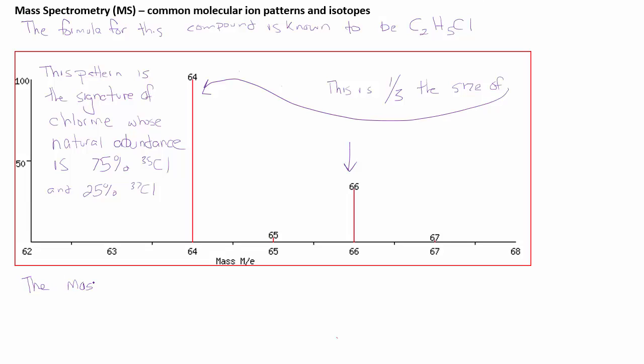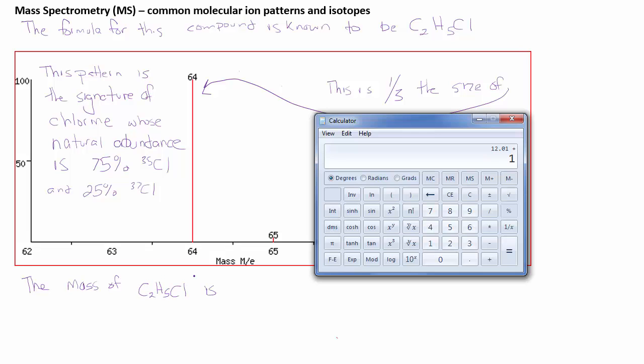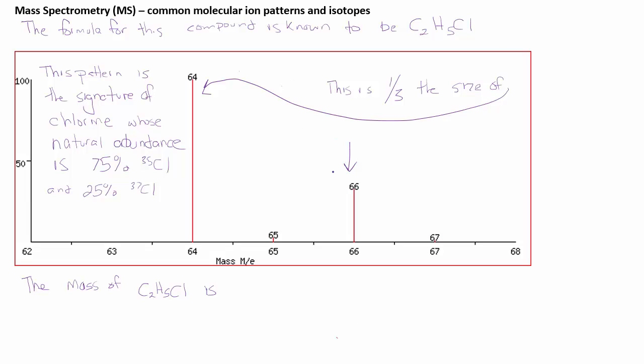So if we know that the formula of this is C2H5Cl, we can add up the mass of C2H5Cl, and we're going to come away with 64.5. You'll notice on the mass spectrum here, 64.5 doesn't exist. Remember, the mass of C2H5Cl, so chloroethane, as we would calculate from the periodic table, would come out to 64.5.